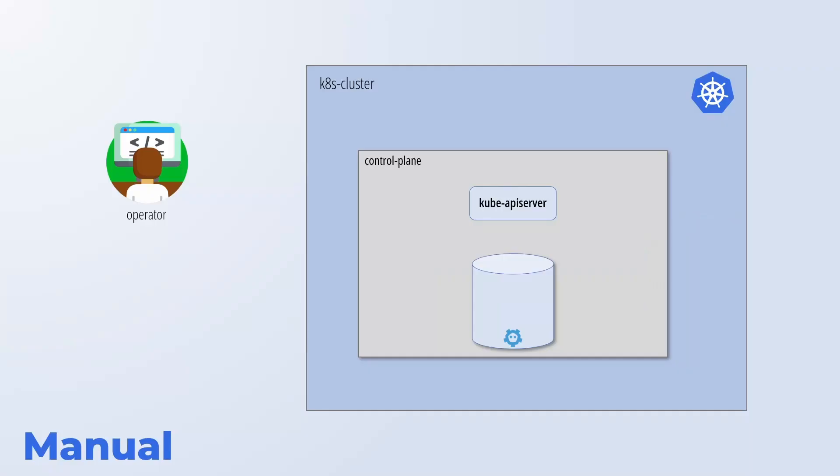Let's start by understanding the simplest scenario first, which is creating secrets on Kubernetes using kubectl. In this case, the kubectl command is translated into an API request to the kubectl server that validates and authorizes the request. Once this step is done, secrets are stored on etcd. This approach is fine if you're experimenting with Kubernetes or preparing for a certification, but you cannot use it in a professional context — it lacks proper security controls, auditability, and it is difficult to scale should you manage more than one environment.